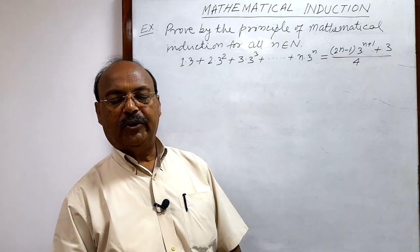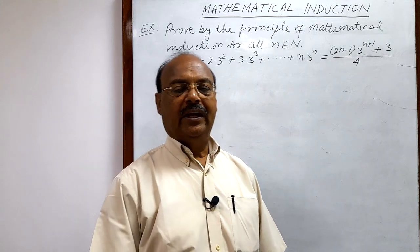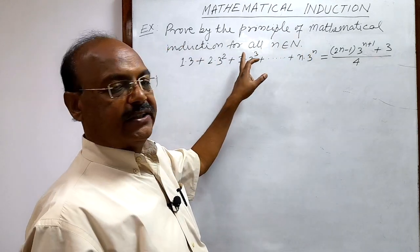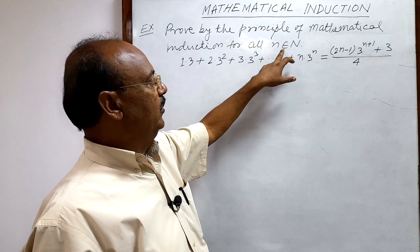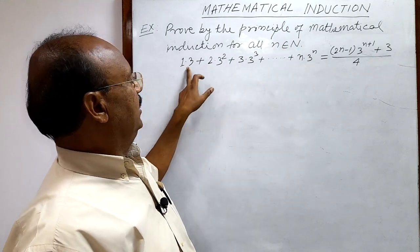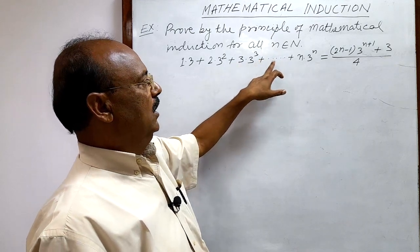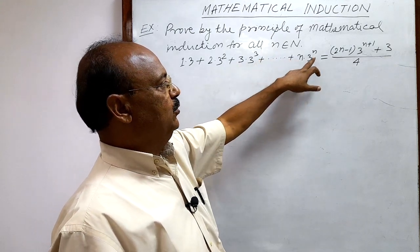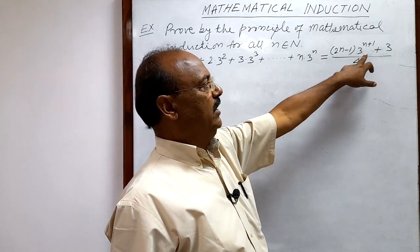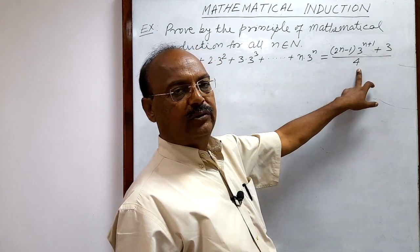Here we will see a very interesting and important question from the chapter mathematical induction. The question is: prove by the principle of mathematical induction for all n belonging to the set of natural numbers N, that 1·3 + 2·3² + 3·3³ + ... + n·3ⁿ is equal to (2n−1)·3^(n+1) + 3 divided by 4.